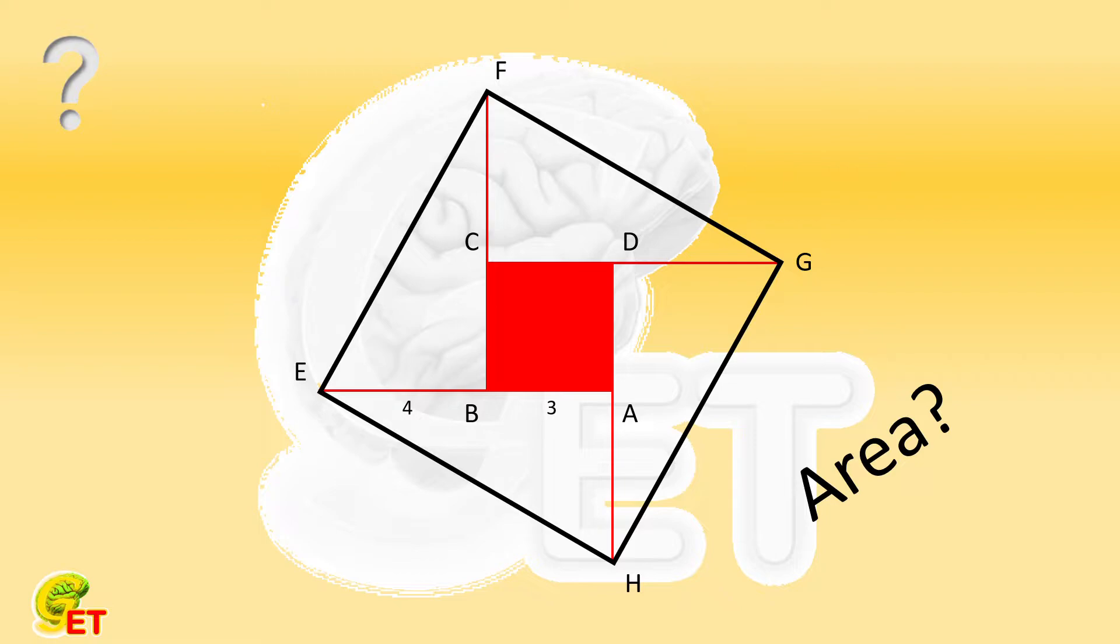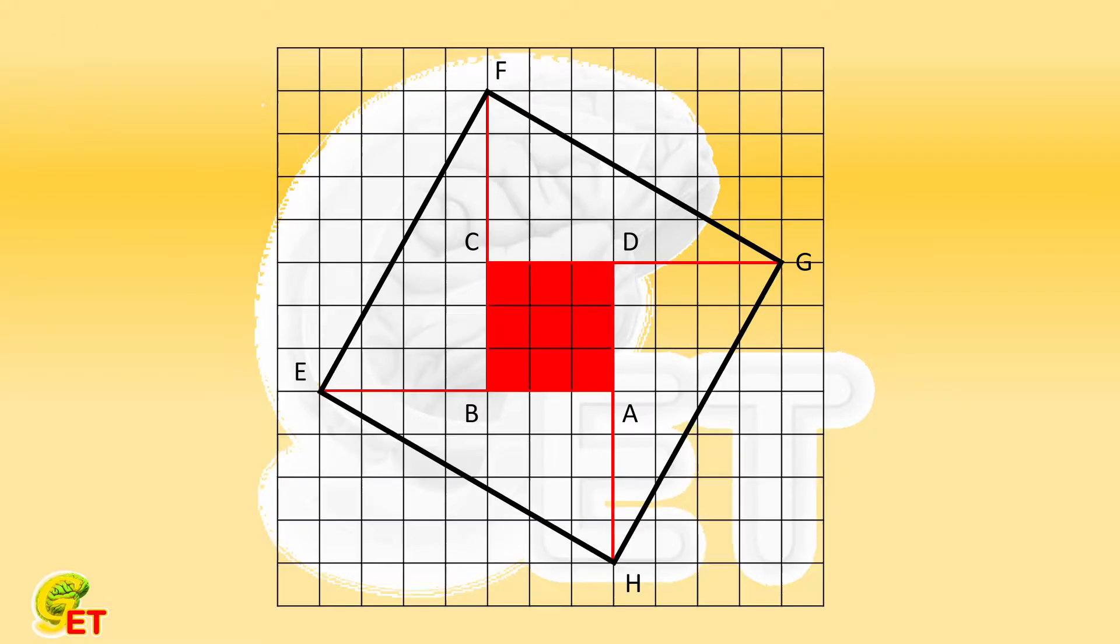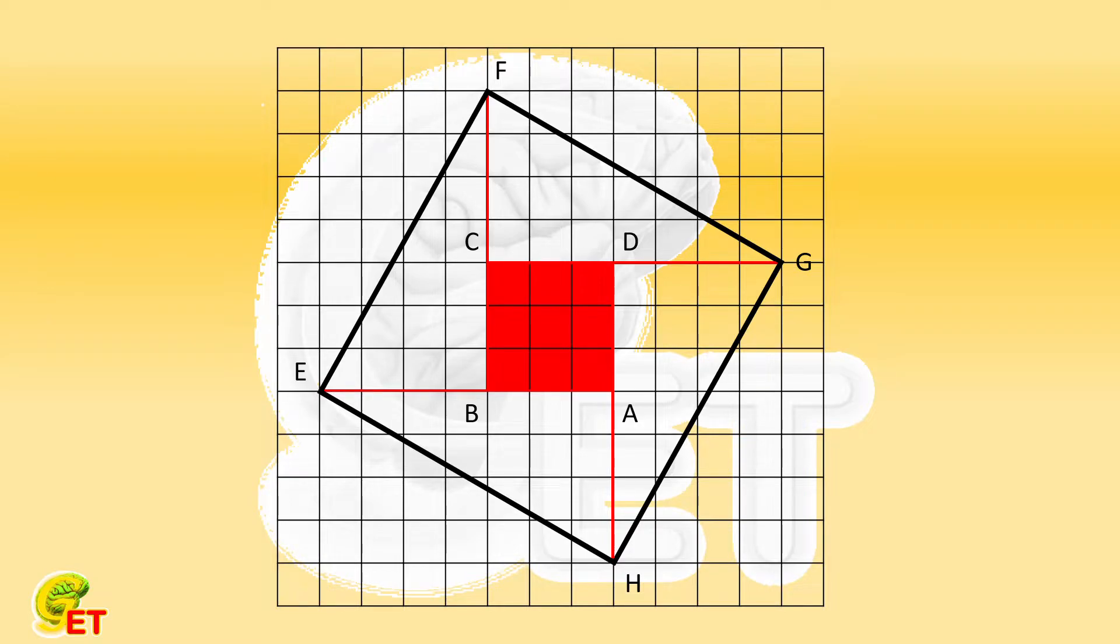To illustrate it more clearly, we put our figure on grids. As you have seen, inside the big square, there are four triangles in addition to the original square, so we color those four triangles separately.